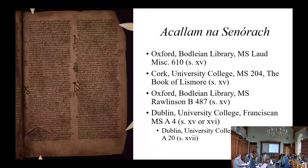Though the Acallam has been dated to the early 13th century through analysis of its socio-political subtext, it only survives in five manuscripts dating to the 15th, 16th, and 17th centuries. The A20 manuscript that you see at the bottom of the slide here is a copy of the perhaps 15th or 16th century A4 manuscript, so we often leave it out when we discuss the manuscripts.